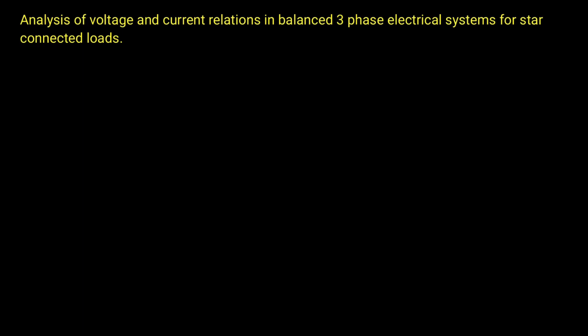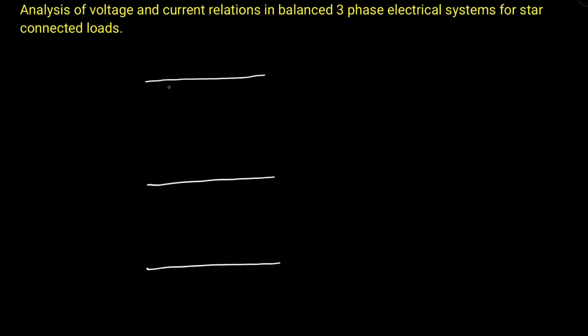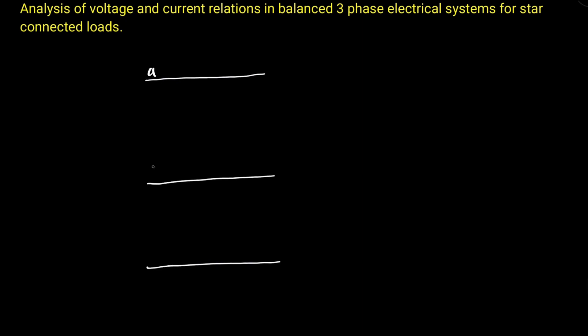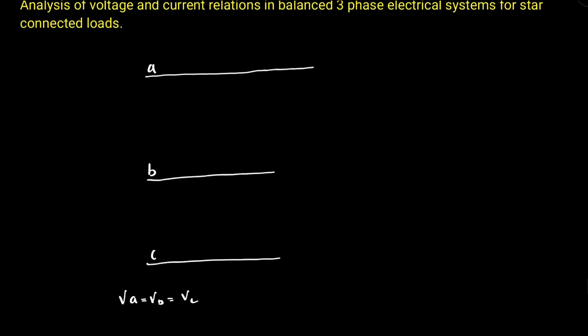We will perform an analysis of voltage and current relations in a balanced three-phase electrical system for star-connected loads. Let us assume a balanced three-phase system in which three-phase power is being supplied to a star-connected load. Since it is a balanced supply, the voltage in all the phases will be equal.